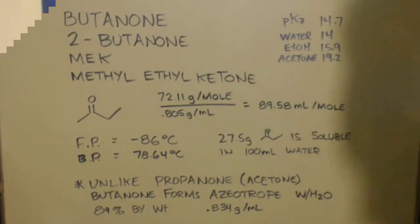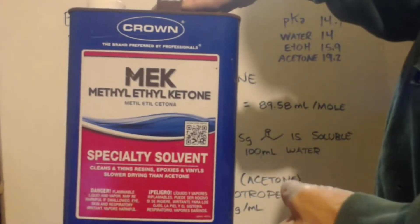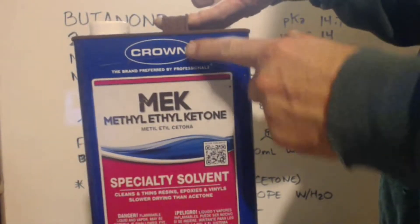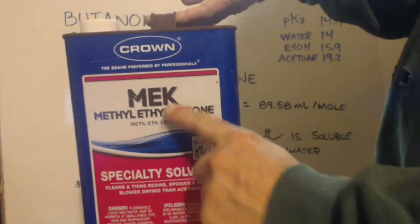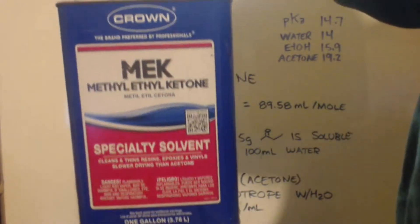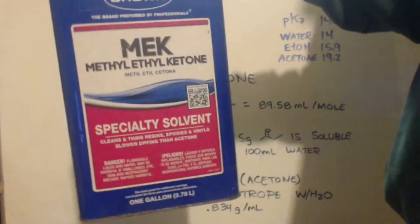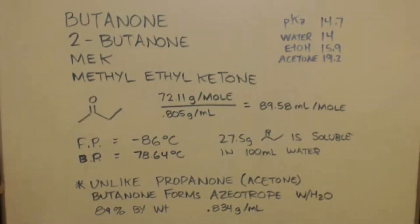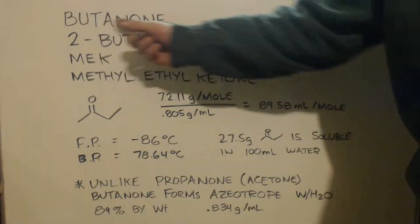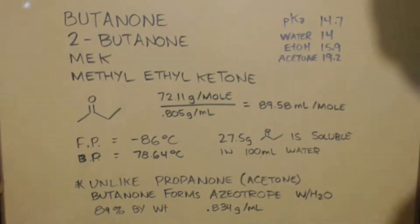We're here to do methyl ethyl ketone. You can see I got some right here — it's a Crown brand. Methyl ethyl ketone. Sometimes it's called MEK. It's probably like 10, 12 bucks or something like this at Lowe's. Any hardware store will have this. I like to call it butanone. A lot of people call it 2-butanone, or MEK, methyl ethyl ketone.